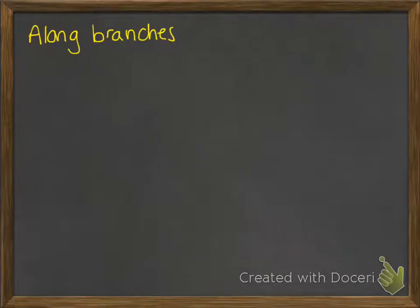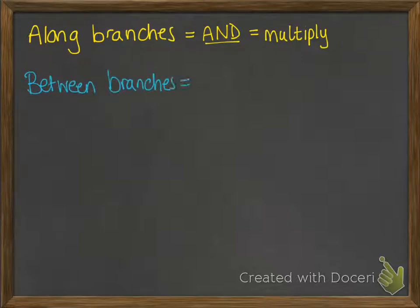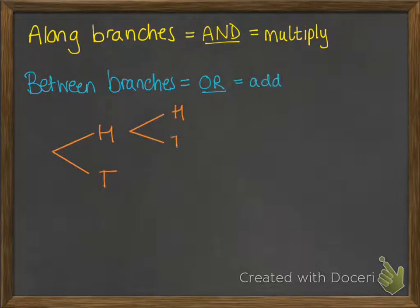The key ideas are: if we're going along the branches, that means it's an 'and' — so like they won and got a mention in assembly — which means we need to multiply. And if we're looking between the branches, that's where we can say 'or', and it means we add up those different possibilities.